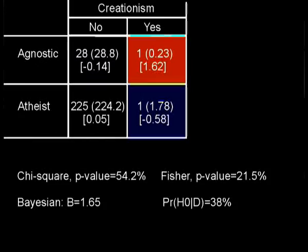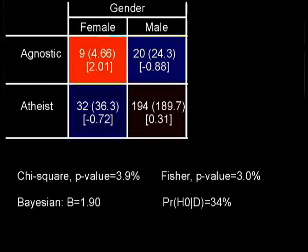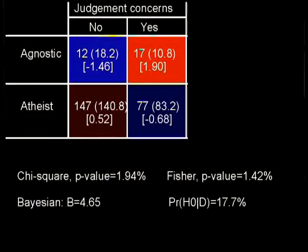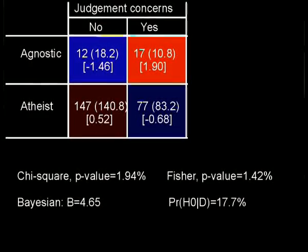Next up is gender. There are more agnostic females than expected under H0. The evidence is still weak but it's getting stronger. Then there's judgment concerns — more agnostics than expected answered yes on that question, and fewer answered no. The frequentist tests are below the level for standalone rejection, but not under the significance level for a string of tests. The Bayes factor is 4.65, so the data is 4.65 times more likely under H1 than H0, and we're starting to get some indications of differences here.